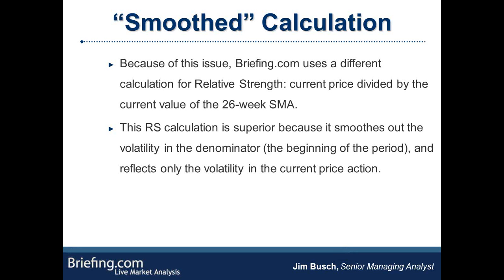That prompted me to do some research and come up with an alternative formula. What we use now is more of a smoothed calculation — you calculate it by taking the current price and dividing it by the current value of the 26-week simple moving average. Basically you're calculating the distance between the price and its moving average, then ranking all the stocks from highest to lowest in terms of how far away they are from the moving average. This calculation is much better because it smooths out the volatility in the denominator — the beginning of the period — and reflects only the volatility in the current price action, which is really what you want to focus on anyway.